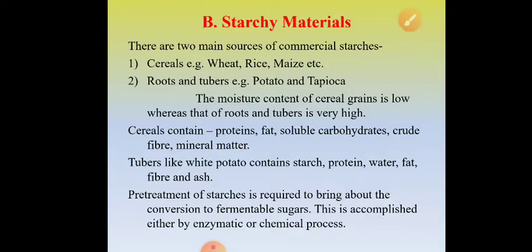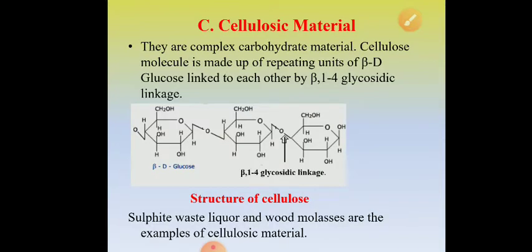Carbohydrate materials are classified into three categories: number one, saccharine material, which we discussed yesterday; number two, starchy materials, which we also discussed; and number three, cellulosic material. Let us now discuss cellulosic material as a source of carbohydrate in the raw materials.